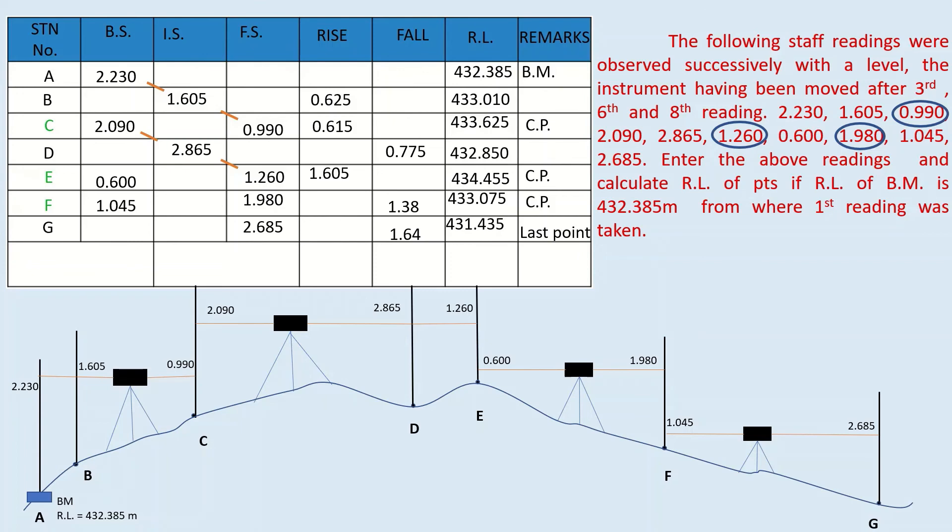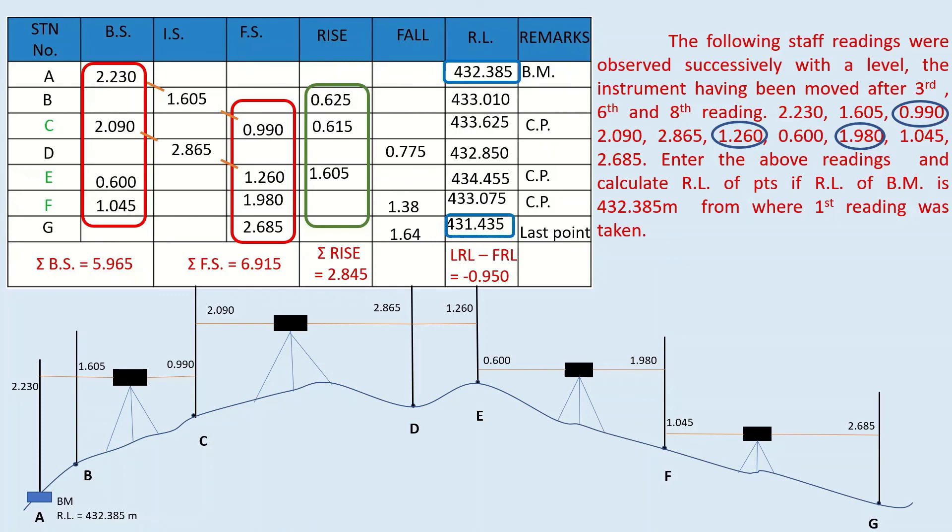Find the difference between last RL and first RL which gives you minus 0.95. Get summation of backside and summation of foresight which is 5.965 and 6.915 respectively. Summation of rise gives you 2.845 and summation of fall 3.795. Hence summation of backside minus foresight is also equal to minus 0.95 and summation of rise minus fall is equal to minus 0.95. Here, summation of backside minus summation of foresight is equal to summation of rise minus fall which is also equal to last RL minus first RL. Hence our calculations are arithmetically correct.